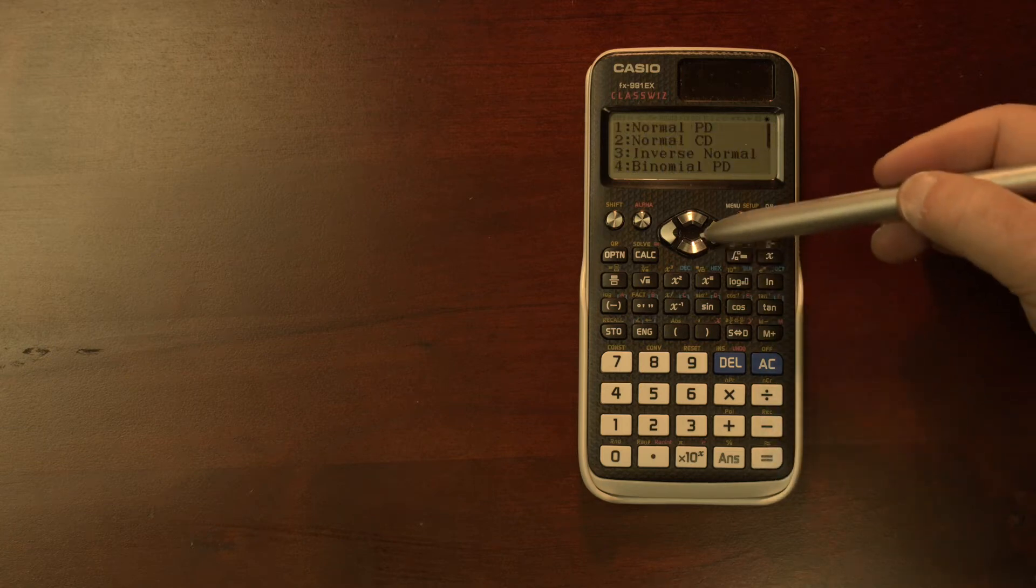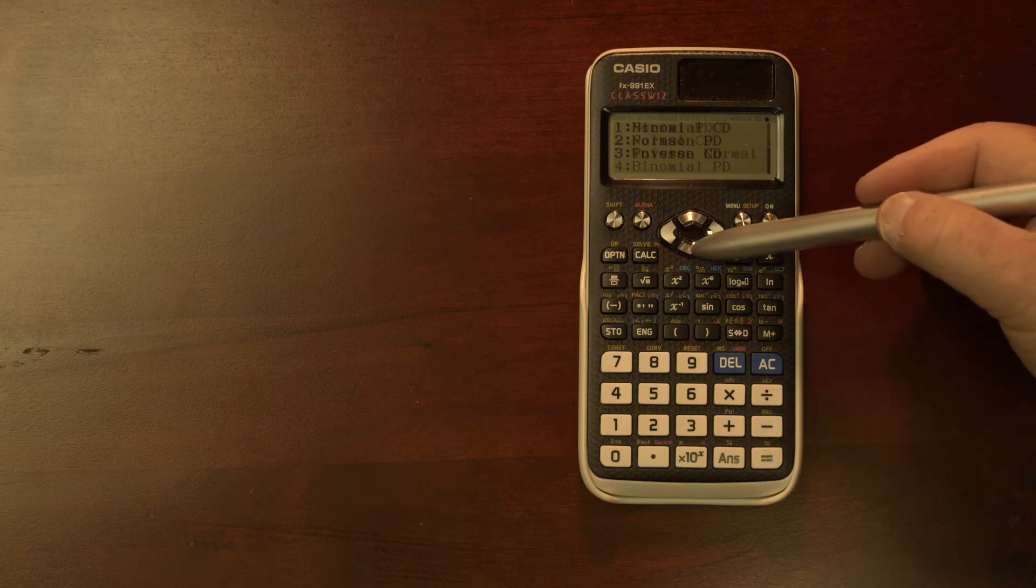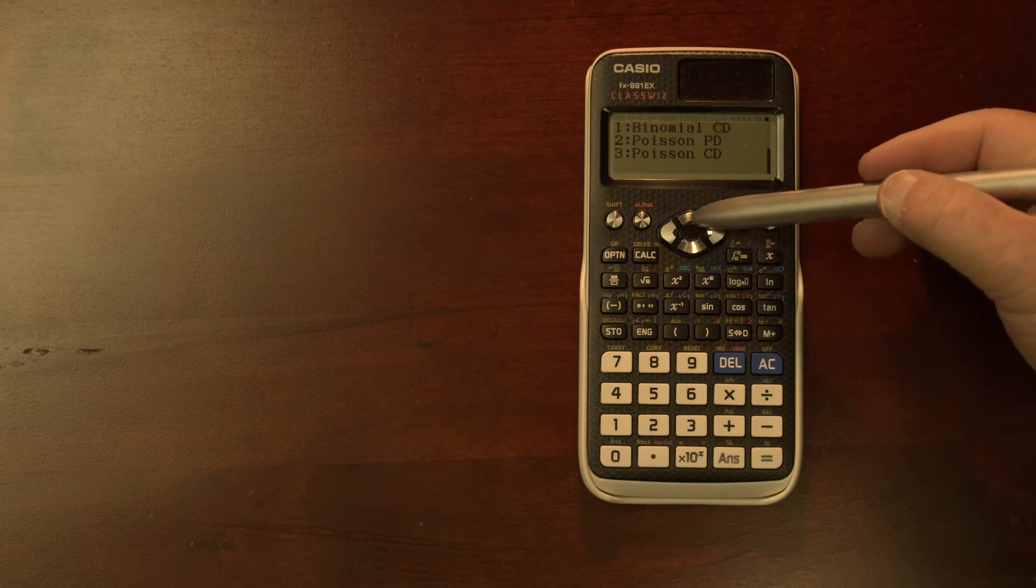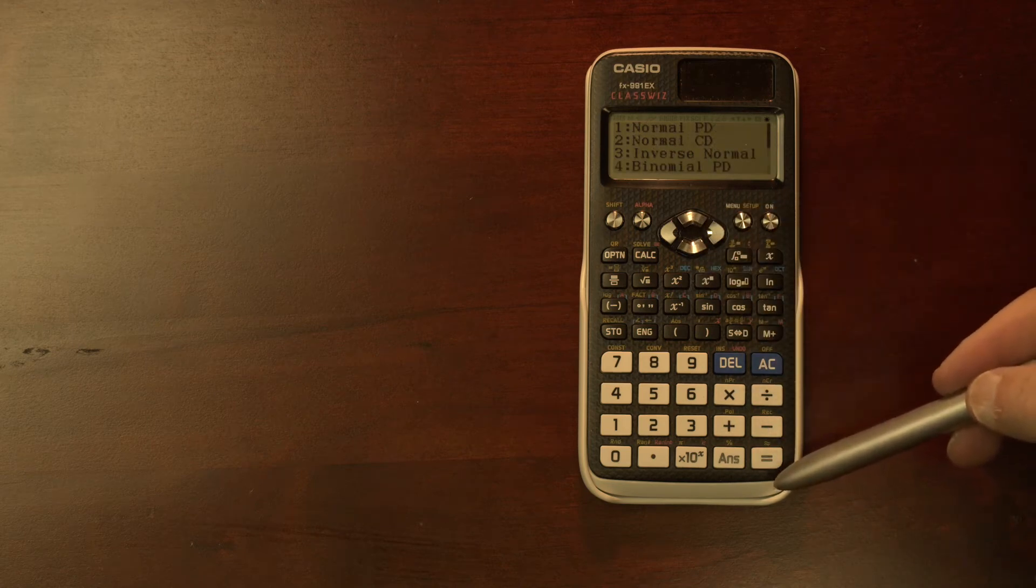There are two pages that we can select from and we're going to select from the first page the normal cumulative distribution.